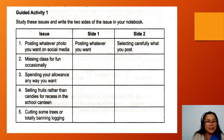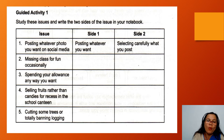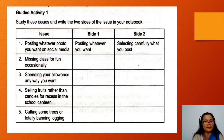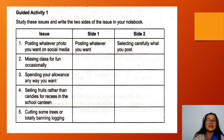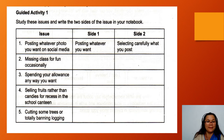Guided Activity 1: Study these issues and write the two sides of the issue in your notebook. Number 1 is already answered. The issue: Posting whatever photo you want on social media. Side 1: Posting whatever you want. Side 2: Selecting carefully what you post. These are the two sides of the first issue. For the second issue, you are going to write the two sides in your notebook.